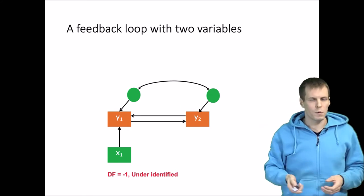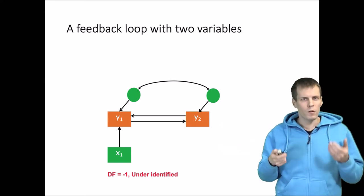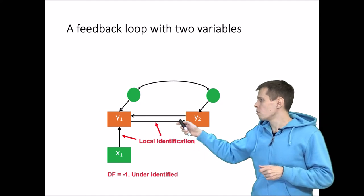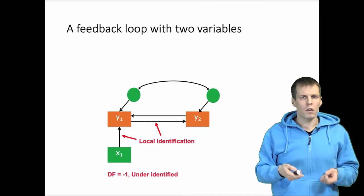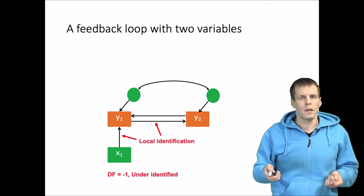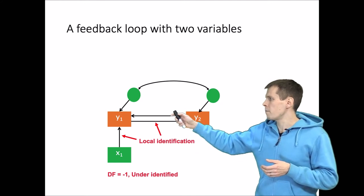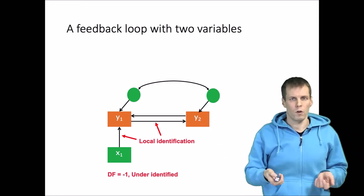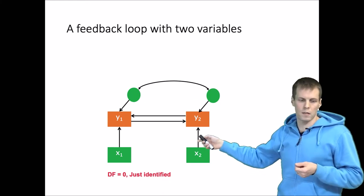What if the disturbances are correlated? Adding that correlation makes degrees of freedom minus one — under-identified. We can again identify the model by adding a second instrument. But we should note that the path from x1 to y1 and from y1 to y2 are actually identified even if the full model is not. This is called local identification. Even if your model is not fully identified, it may be possible to meaningfully estimate some parameters. We can fully identify the model by adding a second instrument, giving degrees of freedom of zero — a just identified model.